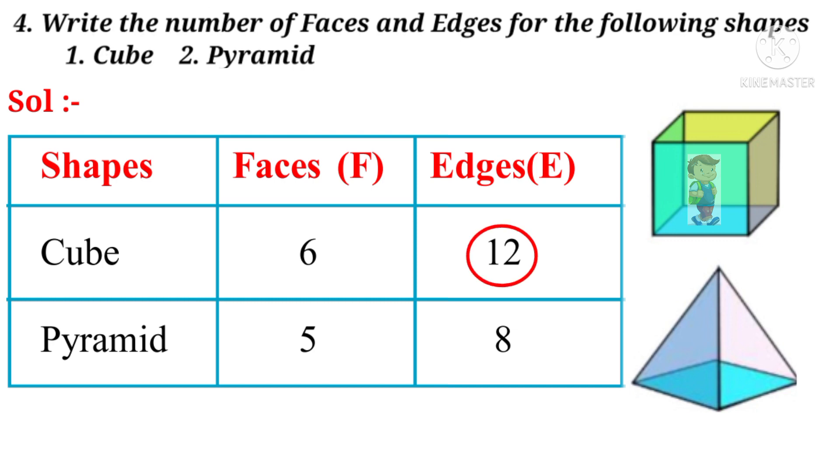Now the boy entered into a room which is in the shape of a pyramid. He observed 4 faces on 4 sides and 1 flooring. So total 5 faces. And the edges: He observed 4 edges on the flooring and 4 edges on the sides. So total 8 edges. So the cube has 6 faces and 12 edges and the pyramid has 5 faces and 8 edges.